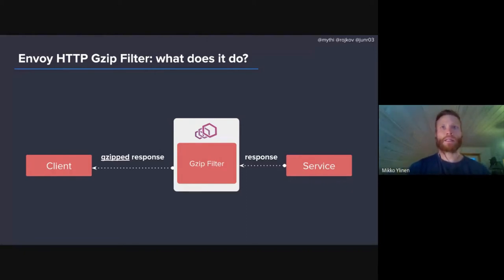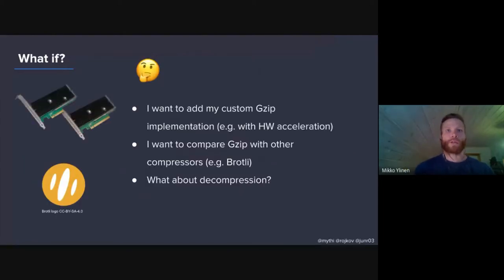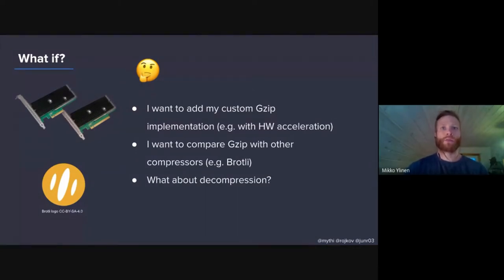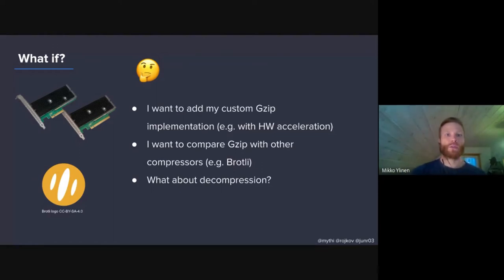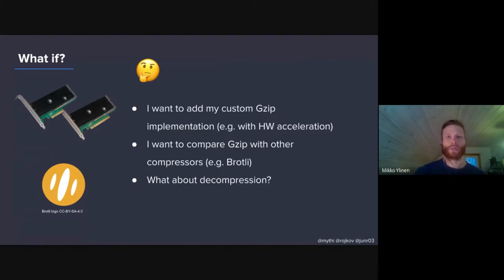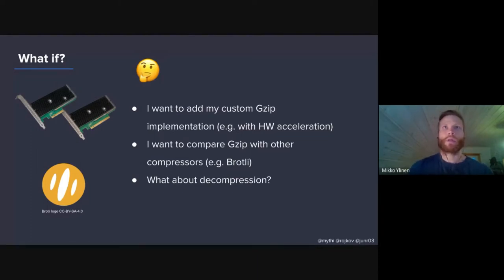Basically, it is limited to only response compression. This all works well if you are interested in providing compression based on just one existing implementation of GZIP. But then you might ask: what if you want to modify that implementation, say, using hardware-accelerated GZIP? Or what if you want to use a different compression algorithm altogether, like Brotli? Or what if you also want to decompress the data at the proxy layer? These were all questions that remained, which we asked ourselves.